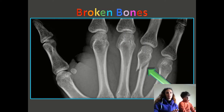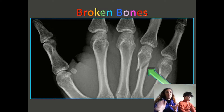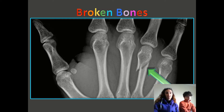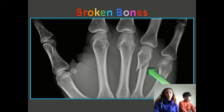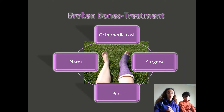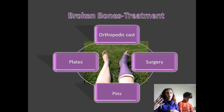Now, sometimes in your musculoskeletal system, things can go wrong. Things do get damaged, especially if you're playing sports or exercising — but that's okay, we have ways to fix that. So the first thing we're going to talk about is broken bones. You can see in the picture a broken bone with the green arrow pointing to it in the hand. Think about how did you break your bone, and what did the doctors do to fix that broken bone?